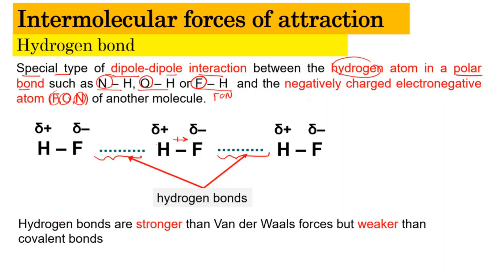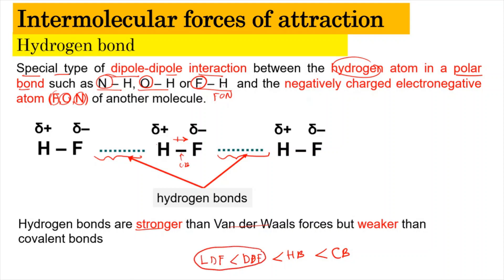Hydrogen bonds are special because they are stronger than Van der Waals forces but weaker than covalent bonds. In terms of strength: covalent bond (the real bond within the molecule) is strongest, followed by hydrogen bonds, which are stronger than dipole-dipole forces and also stronger than London dispersion forces — the two types of Van der Waals forces covered in the previous video.